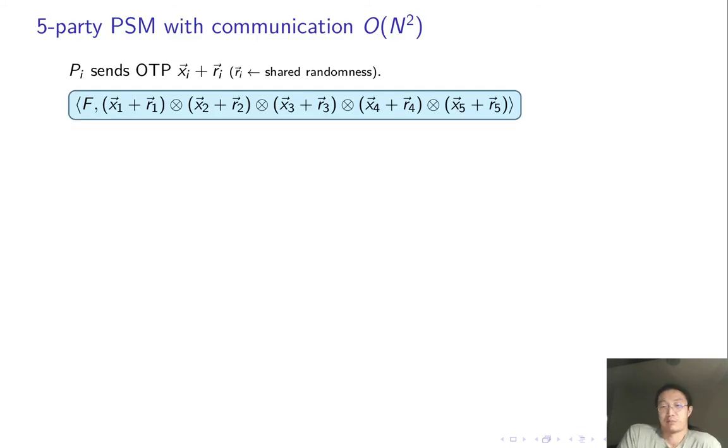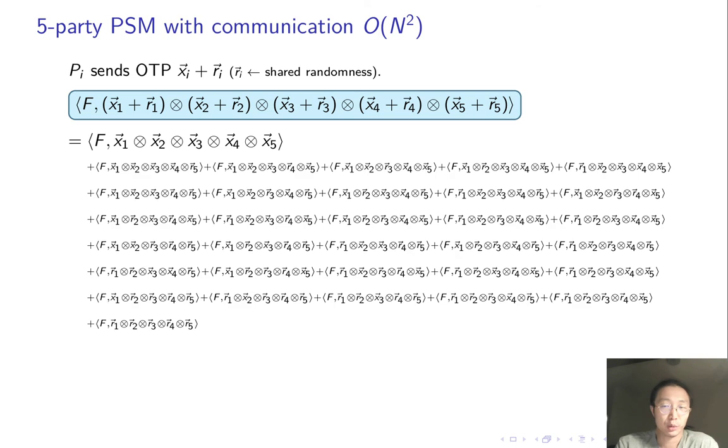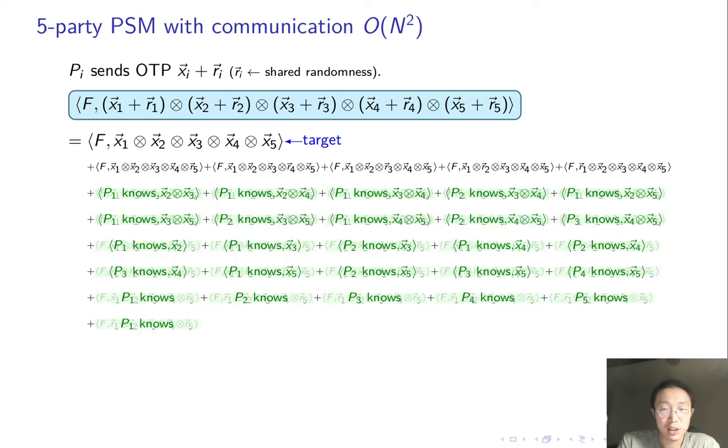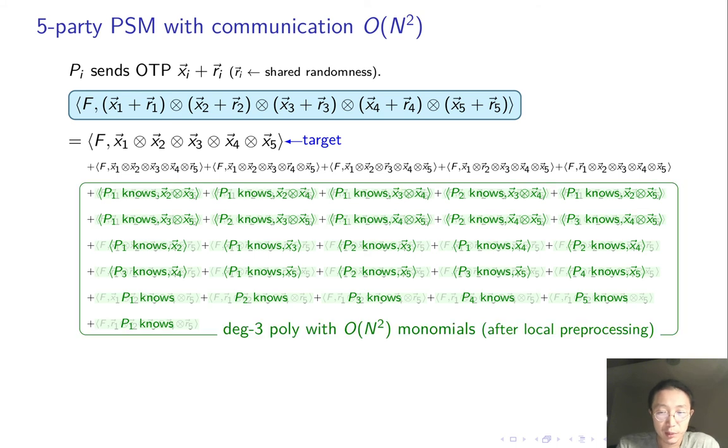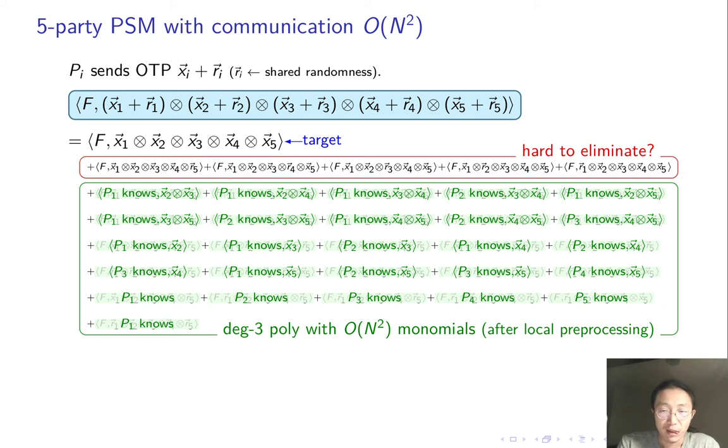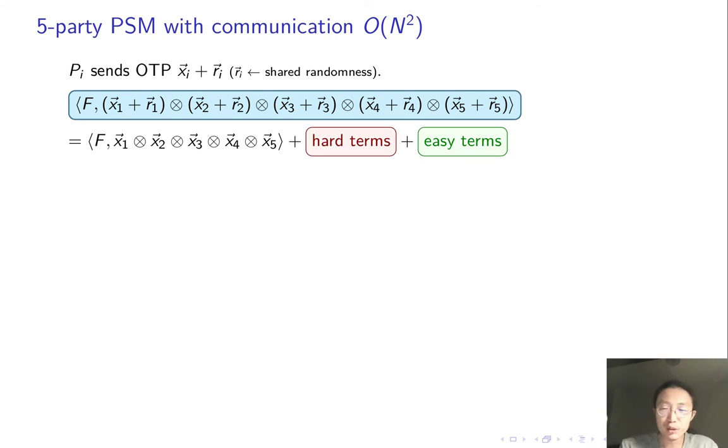Now let's try five-party PSM. Again, every party sends one time pad of its input vector. The referee computes this inner product, which is the sum of 32 terms. Again, the first term is the target we want to compute. Now look at this term. P1 knows everything about this term except for X2 and X3. So this term equals the inner product of something P1 knows and X2 tensor product X3. Similarly for all the following terms. Their sum is a polynomial with n-square monomials. What about the other few terms? I have no idea how to compute them. I call them hard terms and just leave them as they are. So we are stuck here.